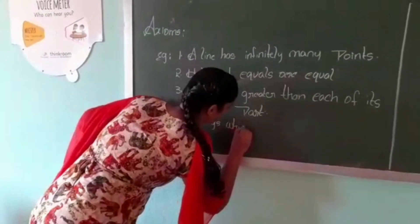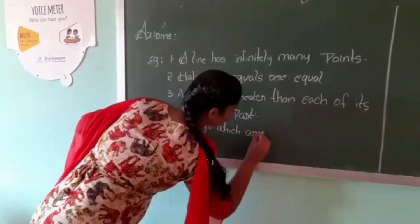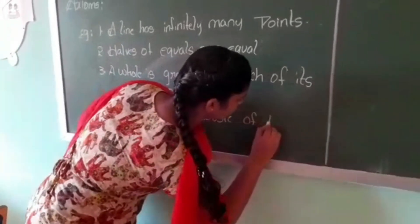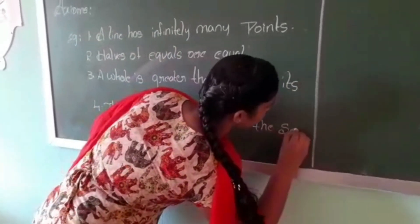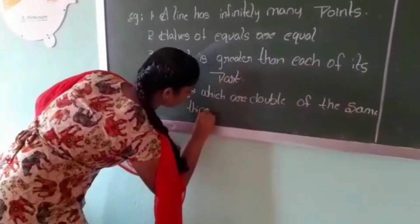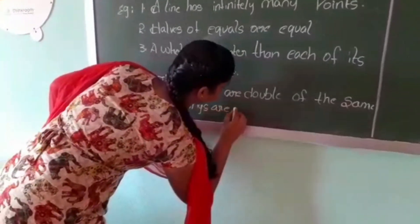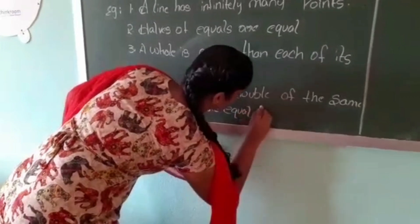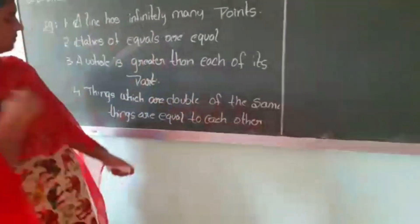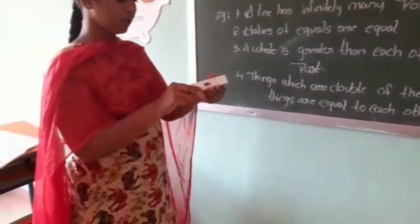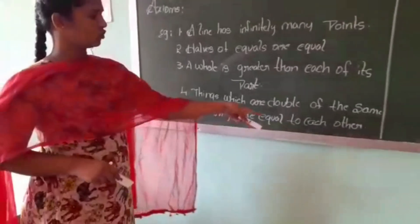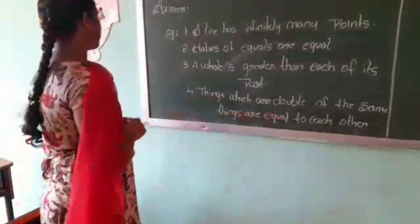Things which are double of the same things are equal to each other. These two are the same things; when I make them into double, these two are equal. So we can say that things which are double of the same things are equal to each other.